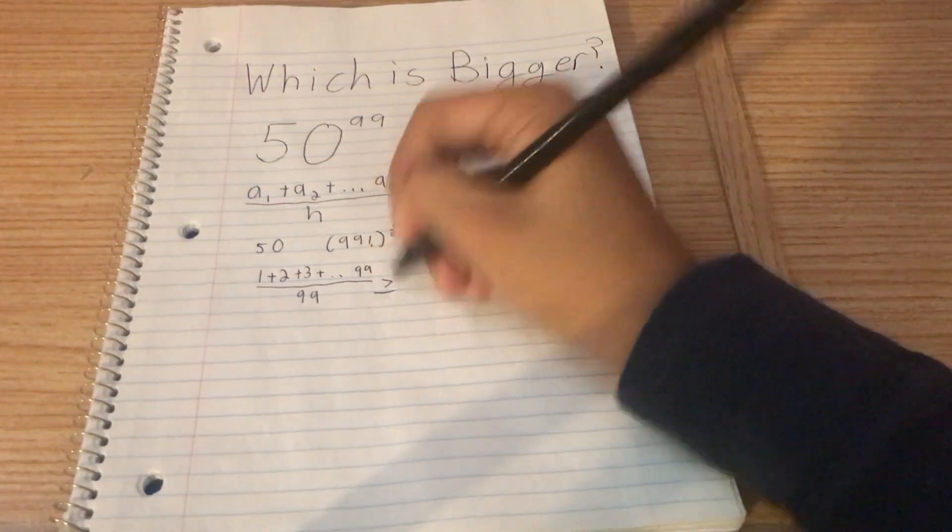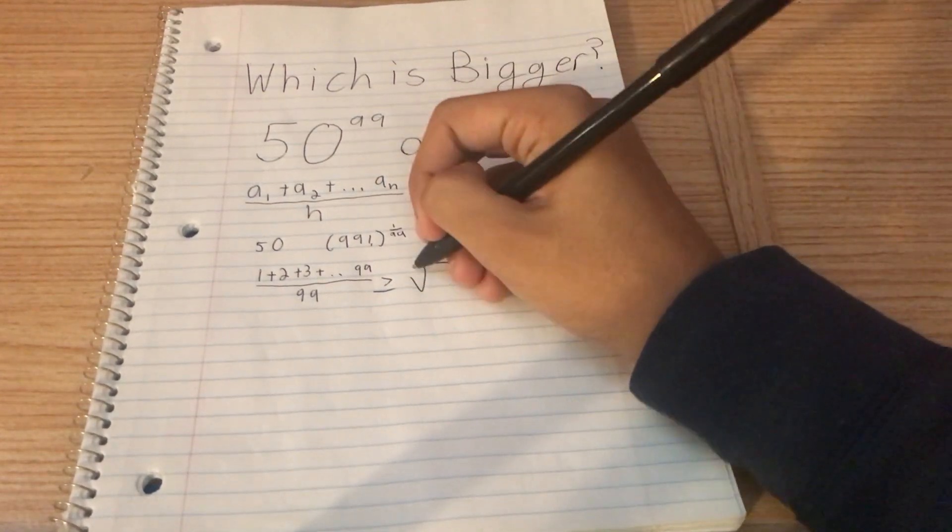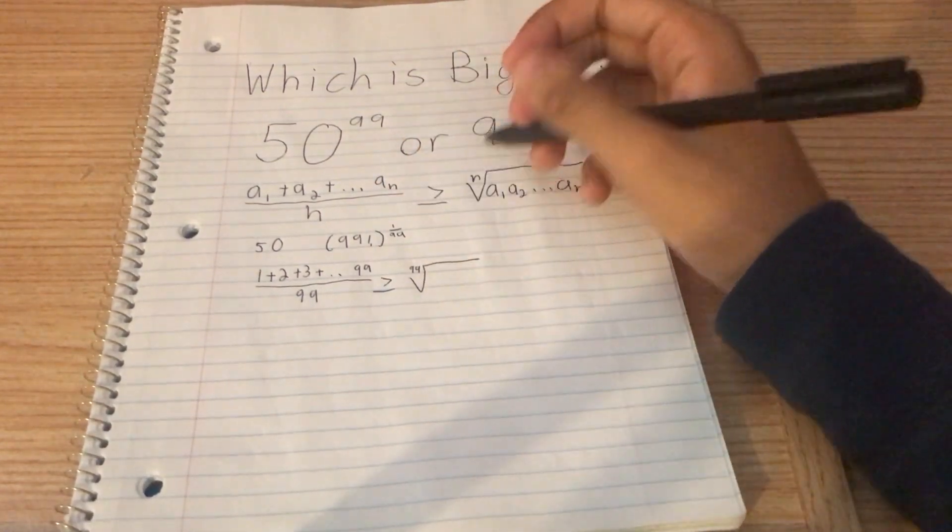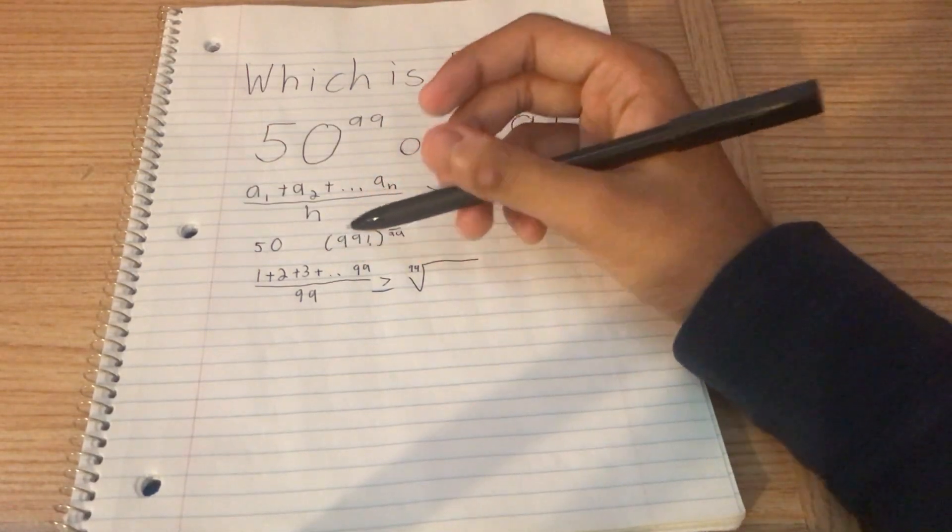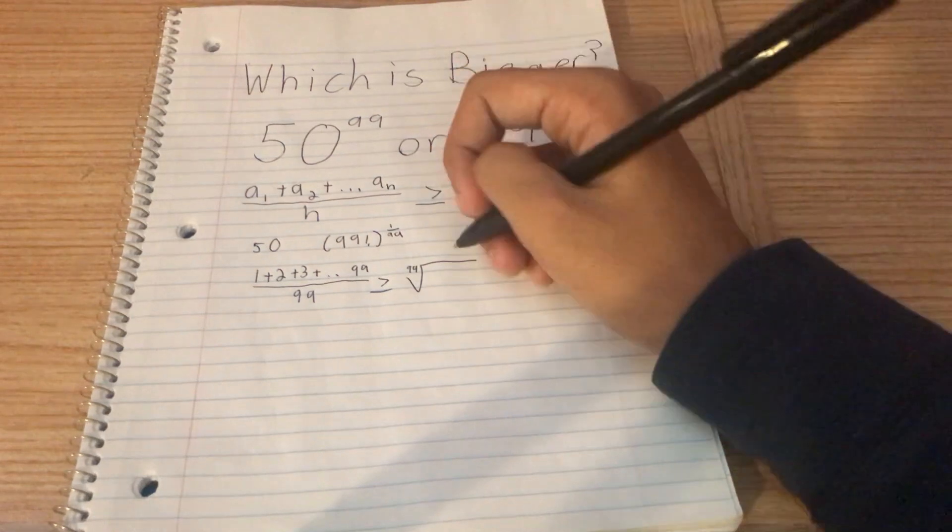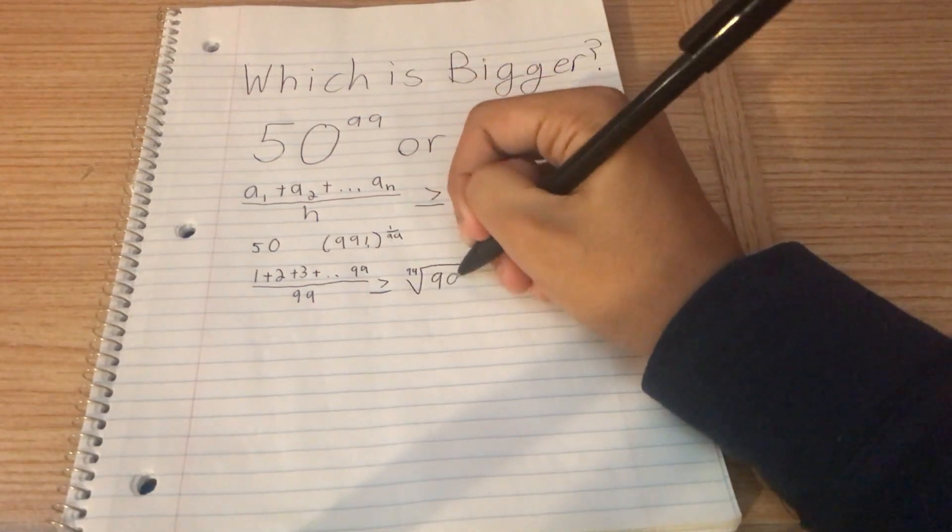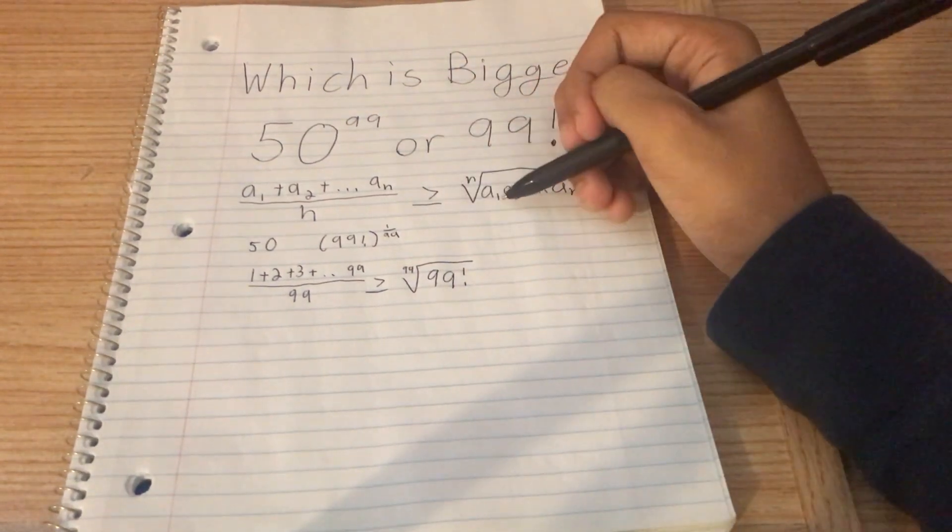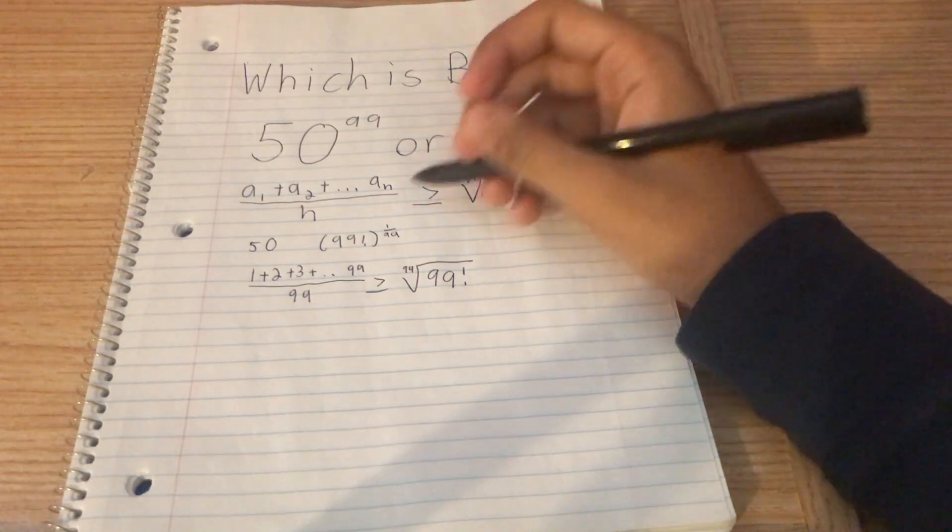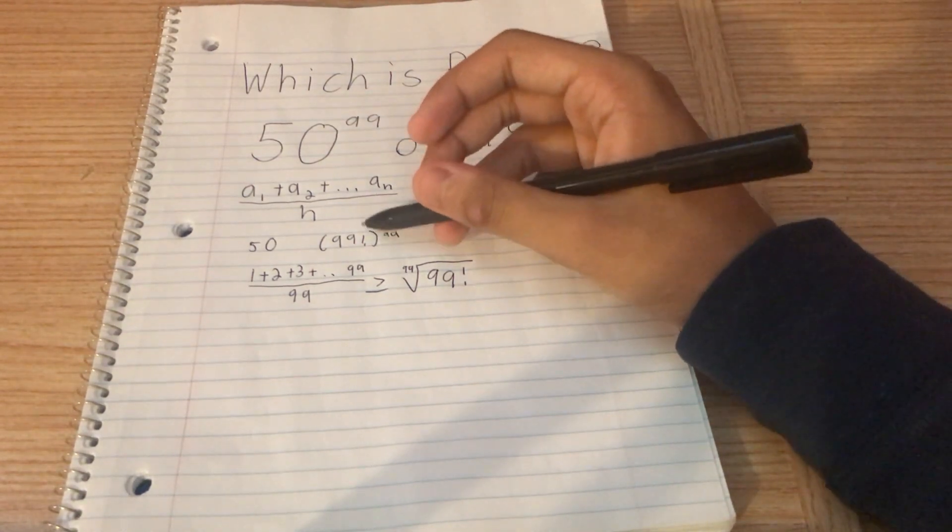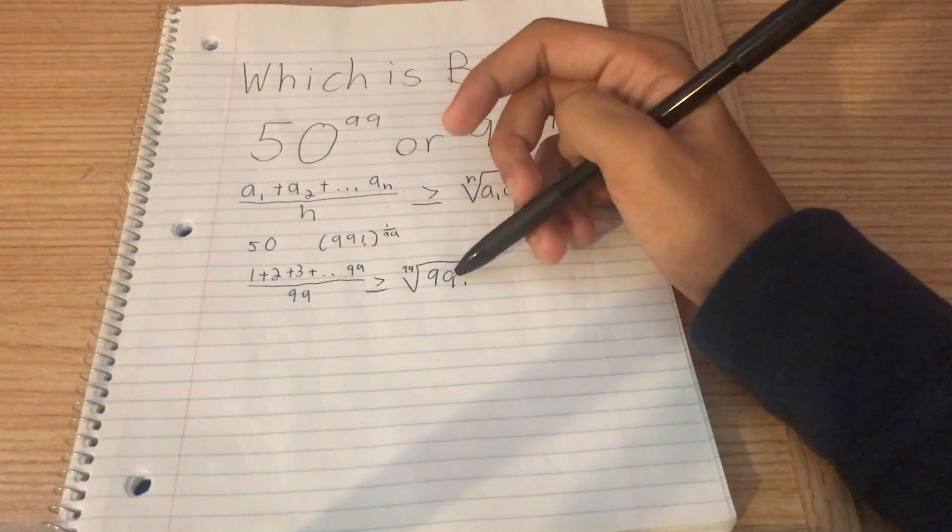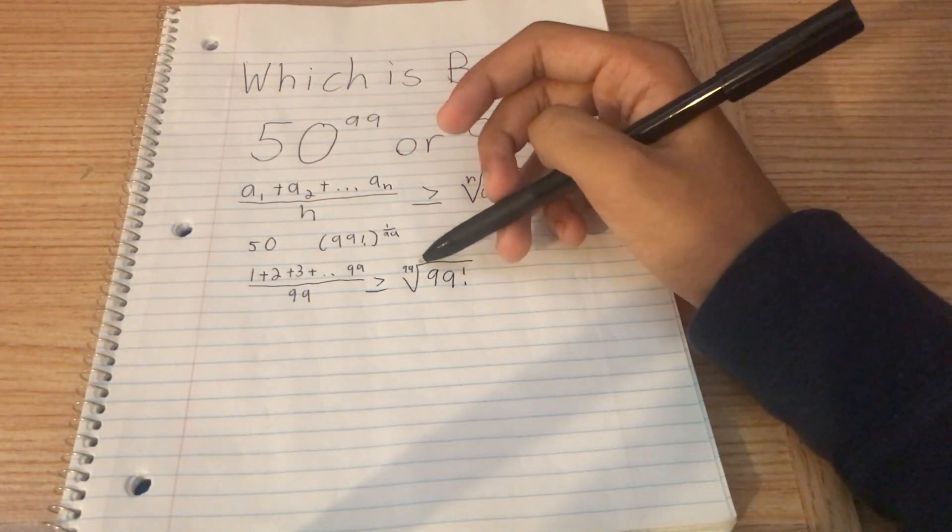That is greater than or equal to the 99th root of 1 times 2 times 3 times 4 all the way to times 98 times 99. That's just 99 factorial, right? Because the product, we said that the product is the same thing as the factorial right here. So when we plug it in, we just get 99 factorial to the power of 1 over 99.